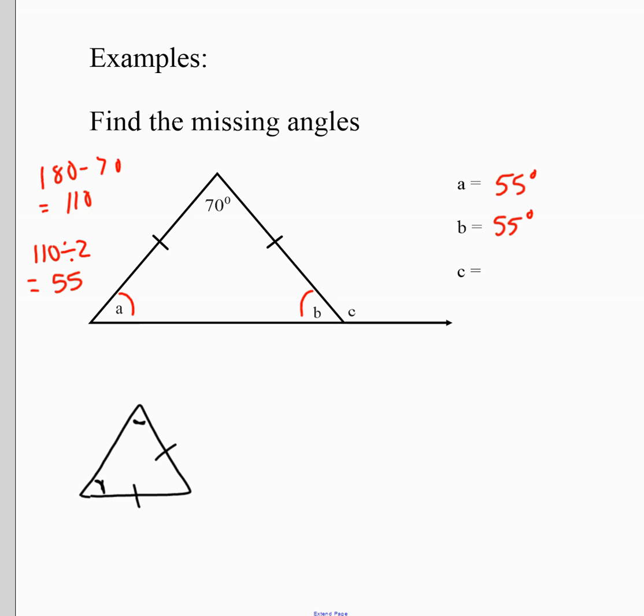To get angle C, we recognize that B and C are supplementary. So we do 180 minus 55 and get 125 degrees. You'll be able to practice finding missing angles using your knowledge of vertical angles, complementary angles, supplementary angles, and interior angles of polygons.